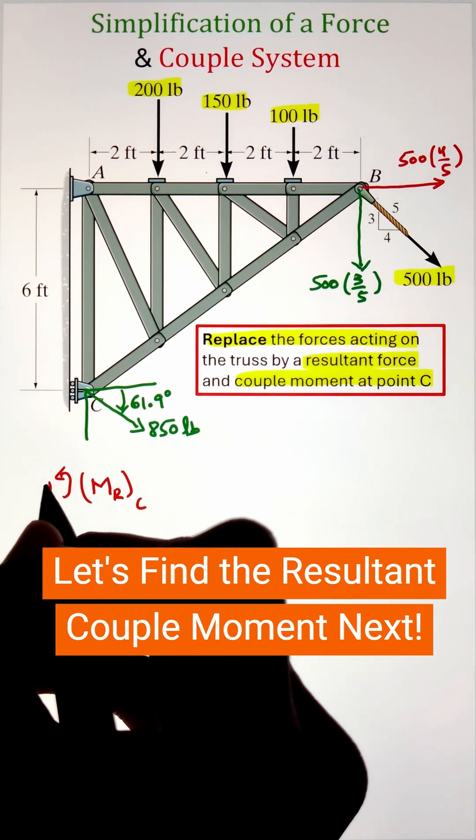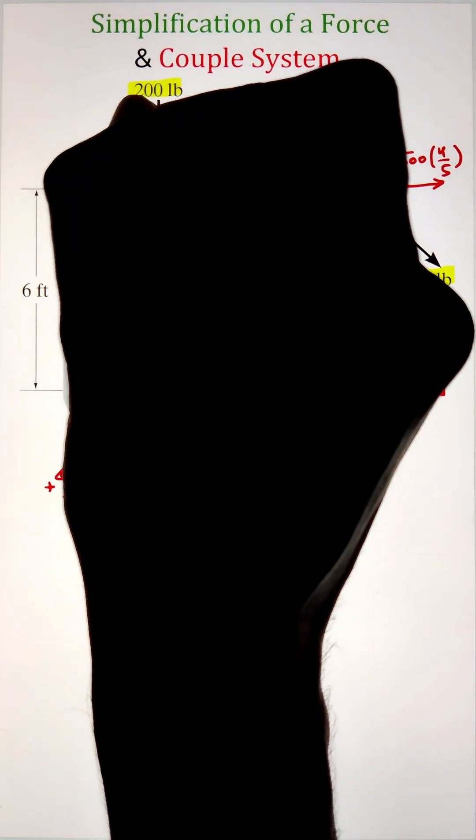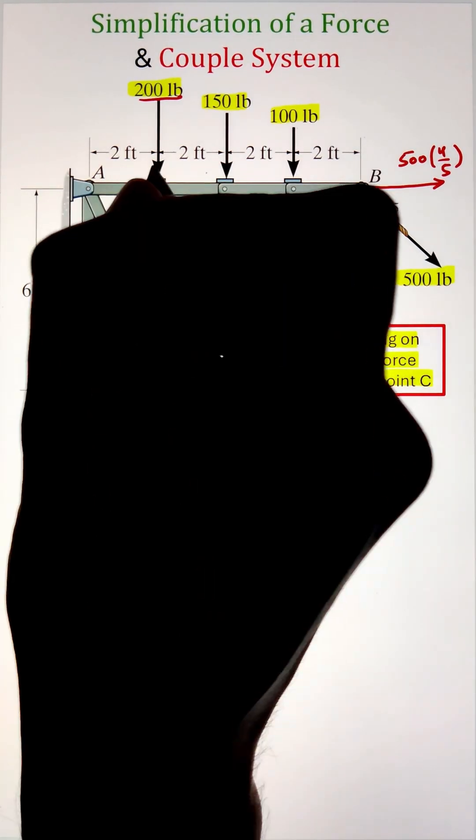Next let's figure out the resultant couple moment at point C. That will be equal to the sum of moment of all the forces acting on the truss with respect to point C.